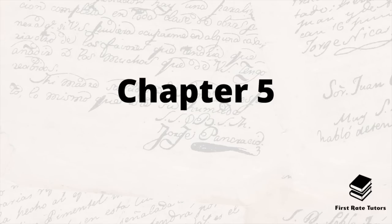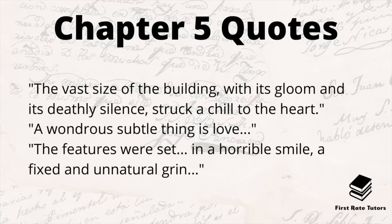Chapter five, The Tragedy of Pondicherry Lodge, shows that upon arriving there are signs the grounds were dug up by Bartholomew searching for the treasure. The housekeeper Mrs Bernstone is heard crying and explains that Bartholomew had locked himself in his room and wouldn't answer. Holmes and Watson break down the door to discover Bartholomew dead. On the table near the dead man is a mysterious hammer-like object and a piece of paper with 'the sign of the four' on it, and stuck near his ear is something that looks like a thorn. Thaddeus notices the treasure is missing and Holmes sends him off to report the crime to the police. Key quotes: 'the vast size of the building with its gloom and its deathly silence struck a chill to the heart'; 'a wondrous subtle thing is love'; and 'the features were set in a horrible smile, a fixed and unnatural grin.'